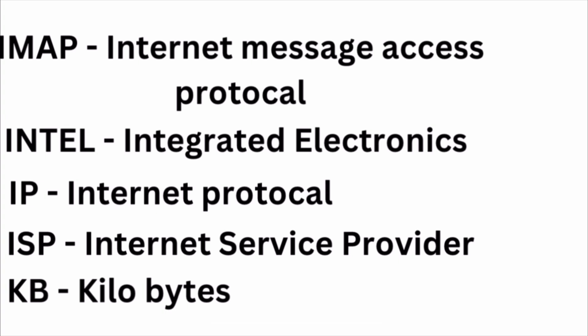IMAP — Internet Message Access Protocol. Intel stands for Integrated Electronics. Next: IP — Internet Protocol. Currently there are two versions of IP: one is IPv4 and another one is IPv6. Next: ISP — Internet Service Provider. Next one: KB — Kilobytes.